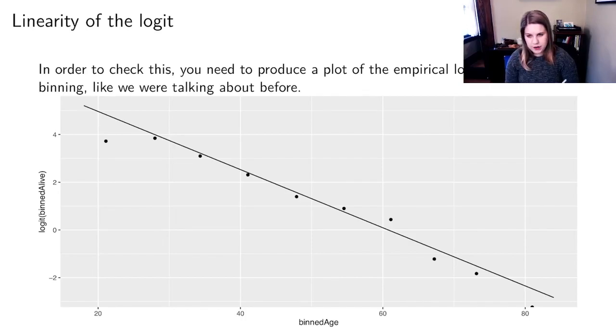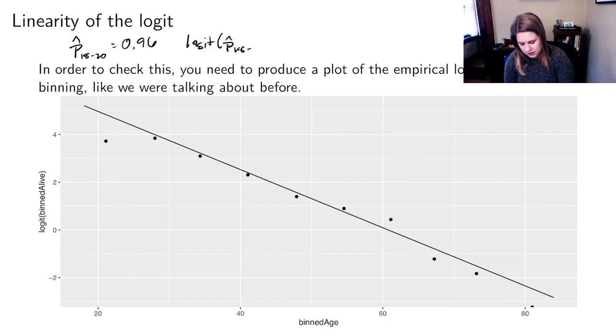It's much more complicated for logistic regression, and we'll get into it when we do the lab. But essentially, in order to check the linearity of the logit, you need to produce a plot of the empirical logit, and that requires binning like we were talking about before. So we found the p-hat for 18 to 20, and I think that was 0.96.